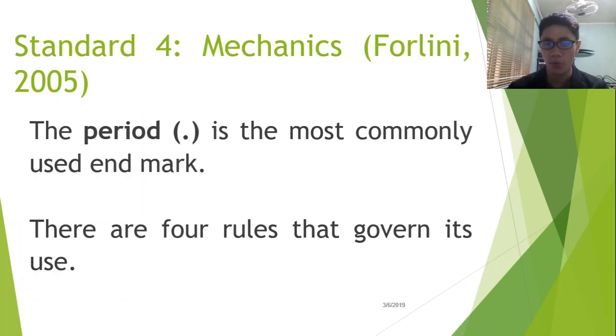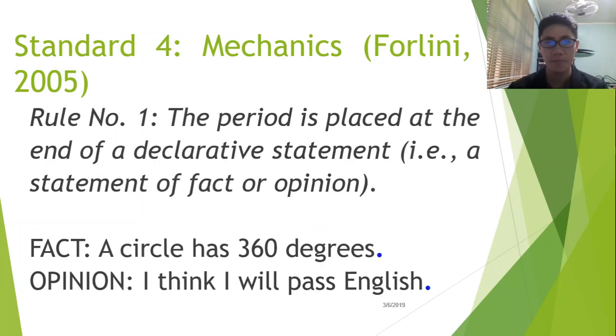Let's review the four rules that govern its use. The first one is, the period is placed at the end of a declarative statement. Now, when we say declarative, it either conveys a fact or an opinion. As we can see in this example, a circle has 360 degrees. It's a fact because whatever your background is, you have to agree because it's proven. And the next one, I think I will pass English is an opinion because there's no evidence that you will pass.